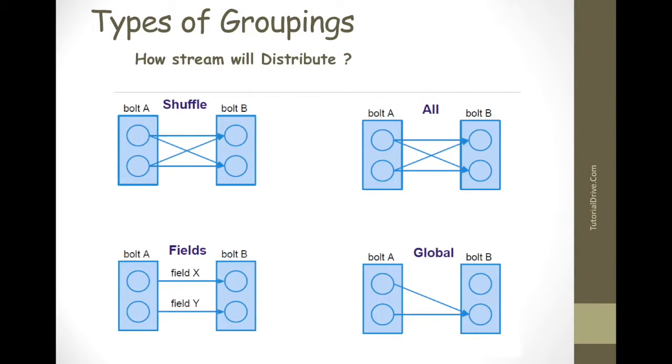Hi everyone. In this lecture we will see types of groupings. One of the most important things you need to do when designing a topology is to define how data is exchanged between the components, like how streams are consumed by the bolts. A stream grouping specifies which streams are consumed by each bolt and how the streams will be consumed.